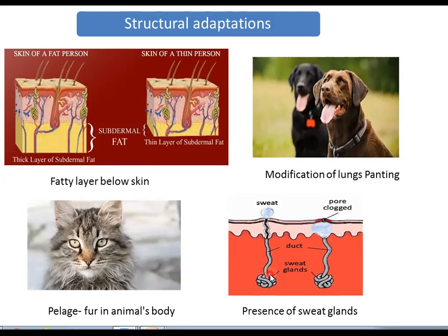The fourth structural adaptation is the presence of sweat glands in the skin. These sweat glands produce sweat, and the evaporation of sweat provides coolness — it reduces body temperature. The presence of sweat glands is an effective strategy for lowering temperature, and is a structural adaptation.